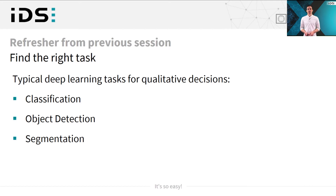The second one is object detection. With object detection, you can, for example, count objects in an image, locate them, find the position, or do an assembly control. And the third one is segmentation, which is mainly used for surface analysis.